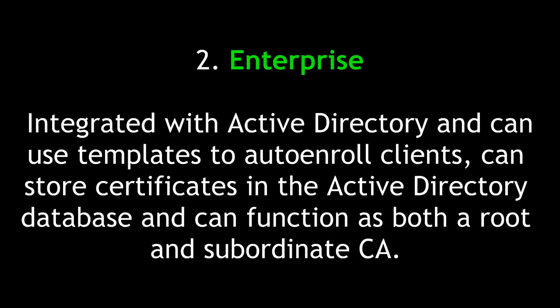The second type of CA is Enterprise. An Enterprise certificate authority is integrated with Active Directory, and can use templates to auto enroll clients. It can store certificates in the Active Directory database, and it too can function as both a root and subordinate CA.